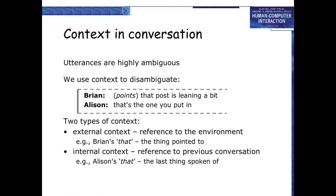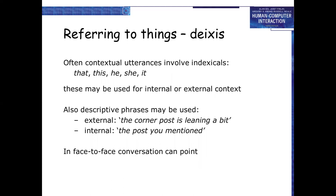Context in conversation: utterances are highly ambiguous, and we use context to disambiguate. There are two types of context. Internal context refers to the previous conversation; external context refers to the environment. Often contextual utterances involve indexicals — that, this, he, she, it — which may be used for internal or external context. Also, descriptive phrases may be used. External example: 'the corner post is leaning a bit.' Internal example: 'the post you mentioned.'